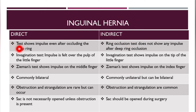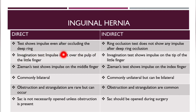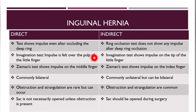The ring occlusion test shows impulse in direct hernia after occluding the deep ring, but does not show any impulse after deep ring occlusion in indirect hernia. Zieman's test shows impulse on the middle finger in direct hernia and on the tip of the index finger in indirect hernia.